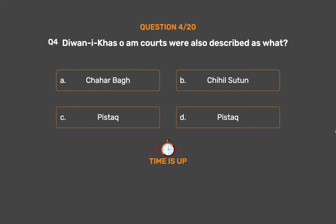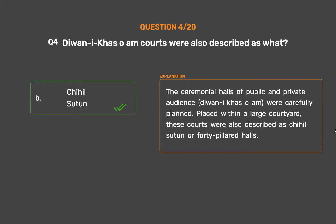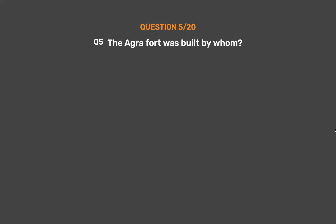The correct answer is Option B: Chihil Sutoon. The ceremonial halls of public and private audience, Diwan-i-Khas and Diwan-i-Aam, were carefully planned and placed within a large courtyard. These courts were also described as Chihil Sutoon, or 40-pillared halls.